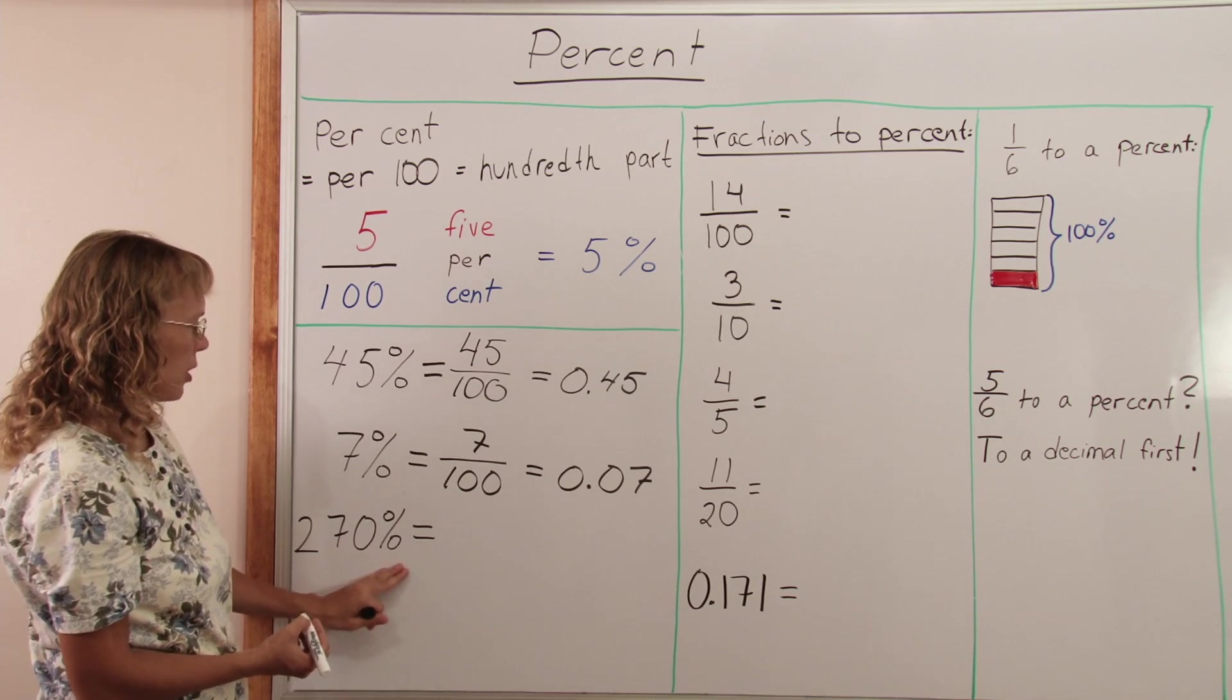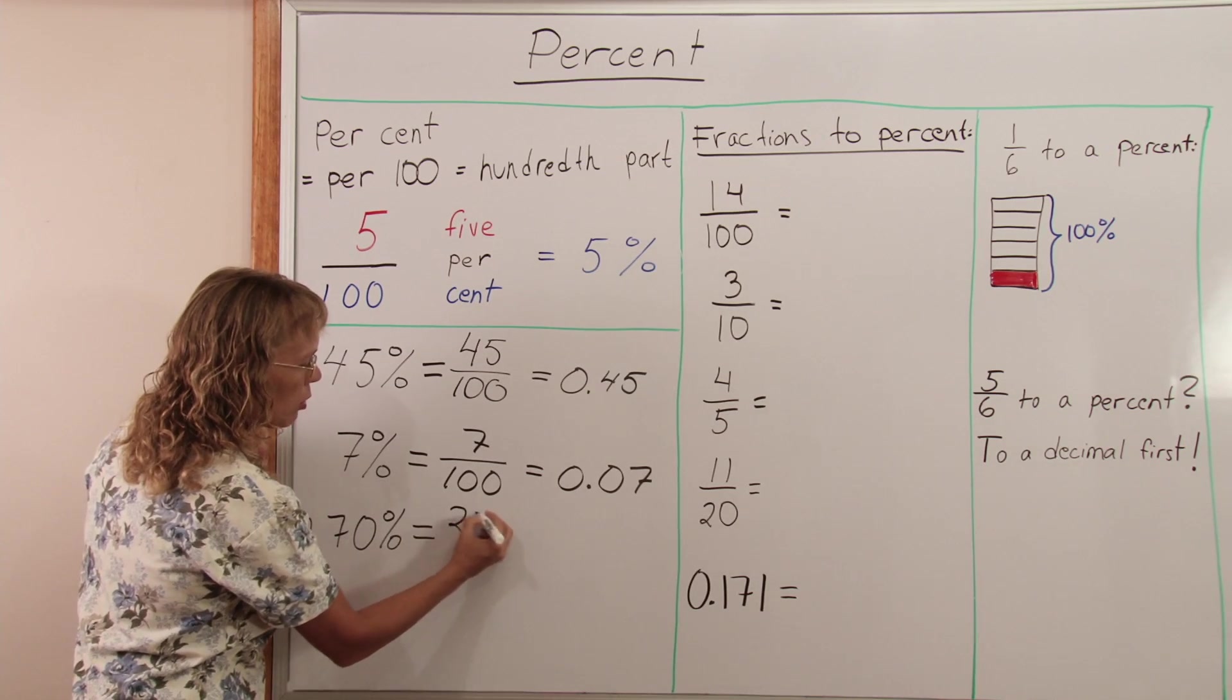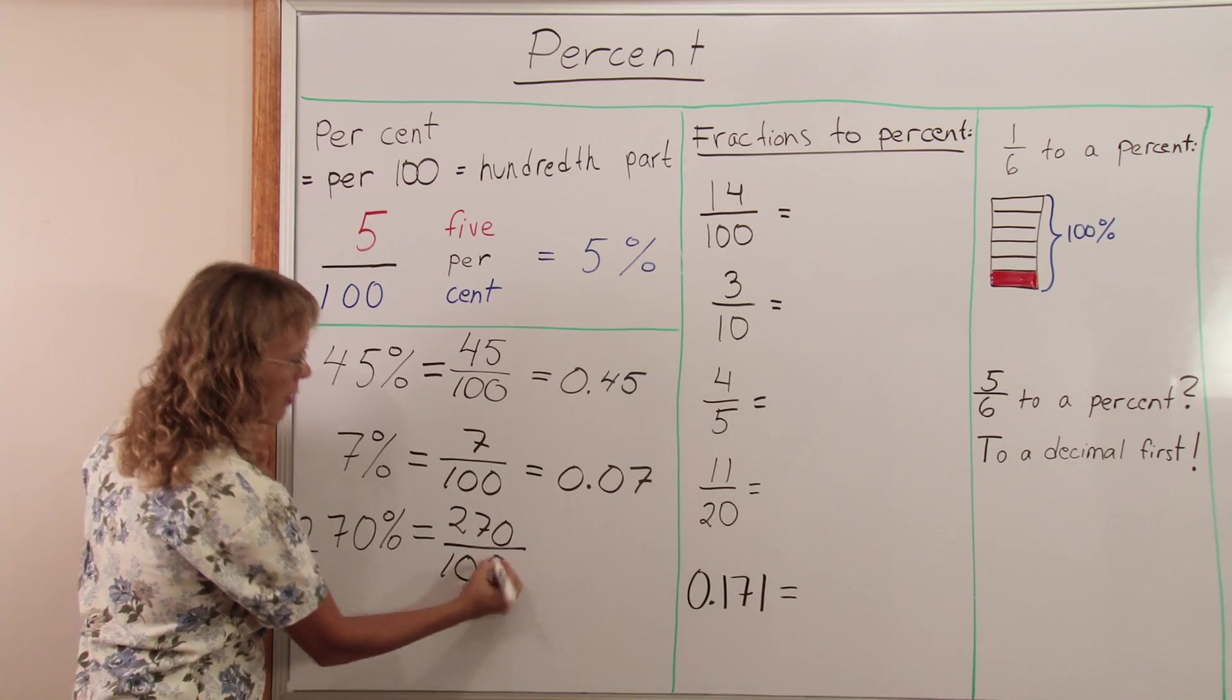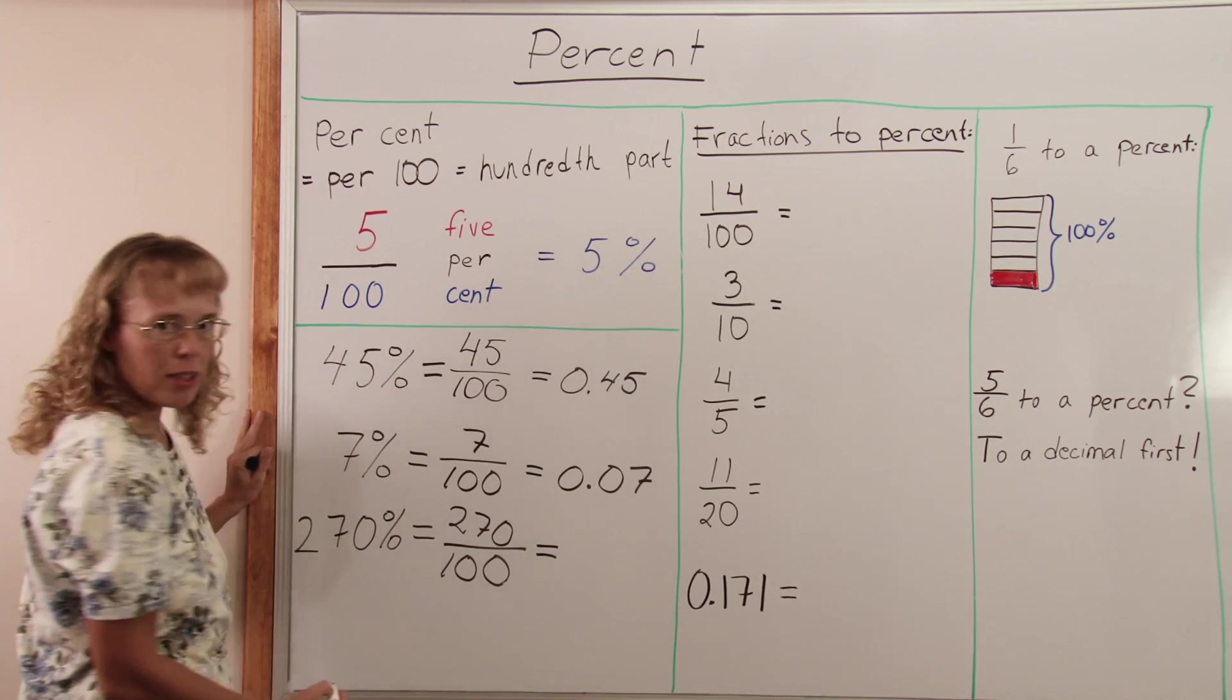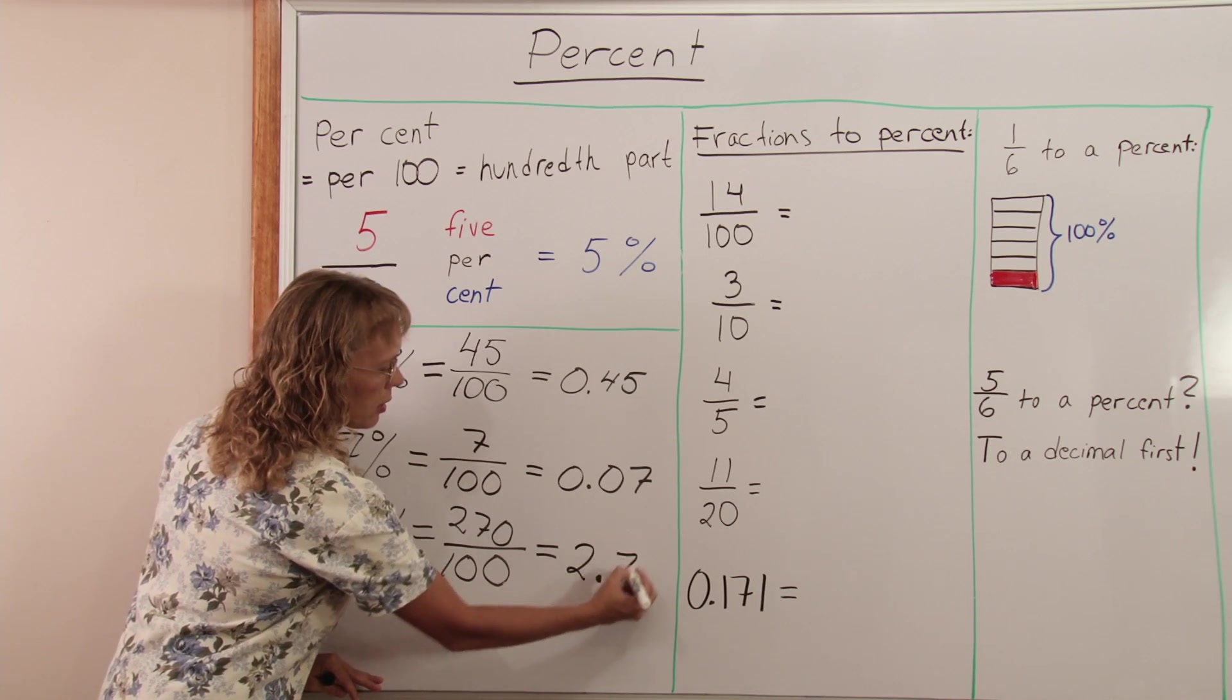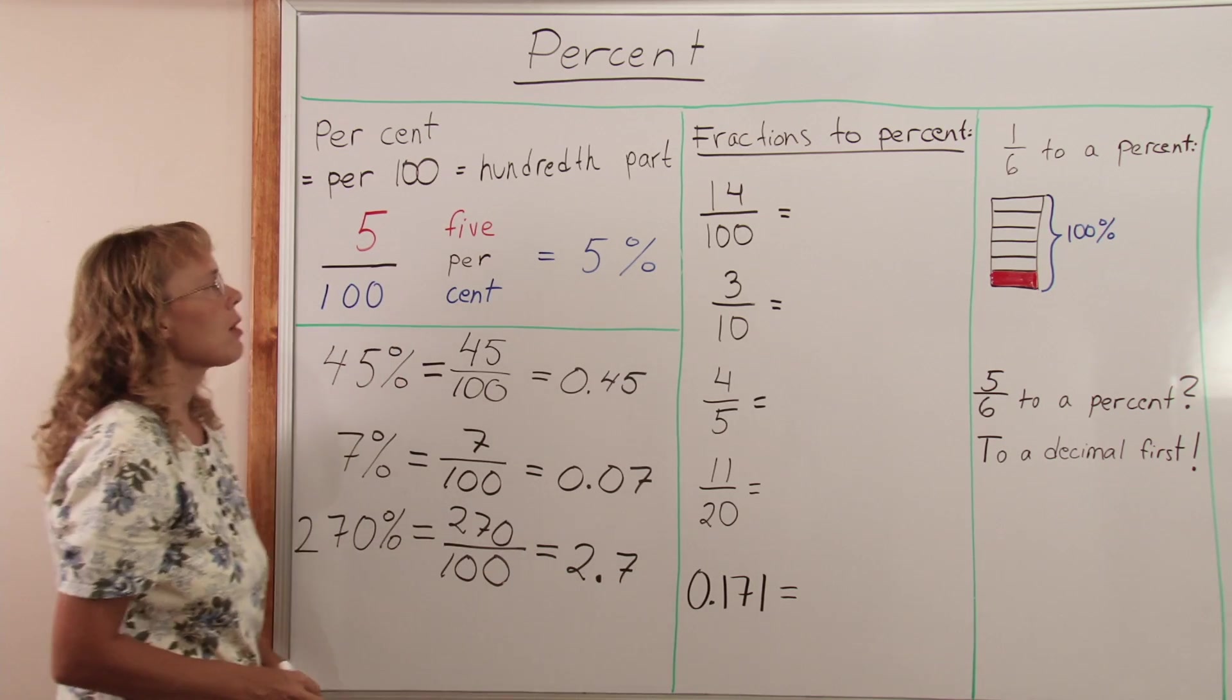And 270 percent the same way. 270 per cent or the hundred. Like that. As a decimal this is now more than one. It's going to be 2 and 0.70 or 0.7 either way.